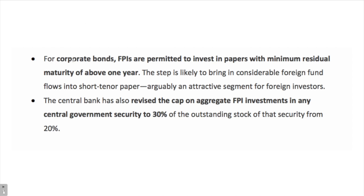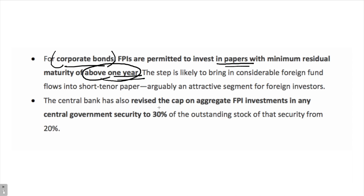For corporate bonds, FPIs are permitted to invest in papers with a minimum residual maturity of above one year. This step is likely to bring in considerable foreign fund flows, as it is an attractive segment for foreign investors. So if the residual maturity of a corporate bond is below one year, FPIs cannot invest in it.